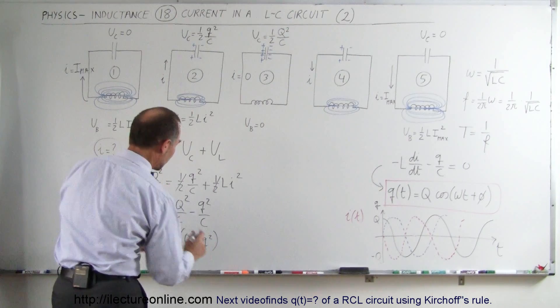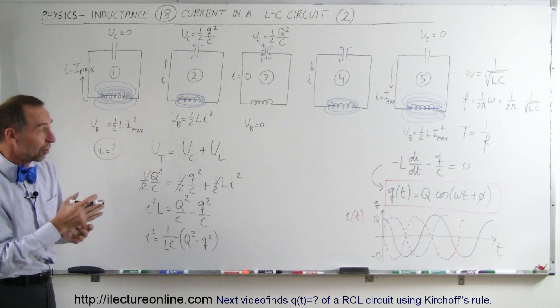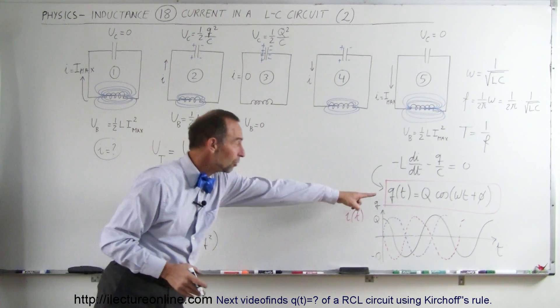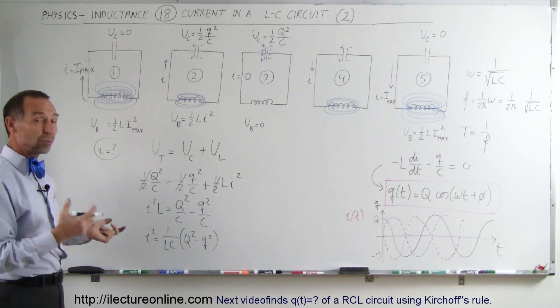Remember, capital Q is the maximum charge that the capacitor can have and Q is the capacitance of the charge as a function of time, which is defined by that equation right there. Now all we have to do is take the square root of both sides.